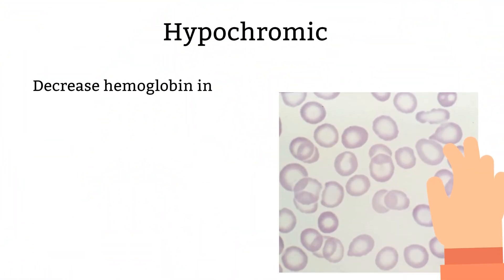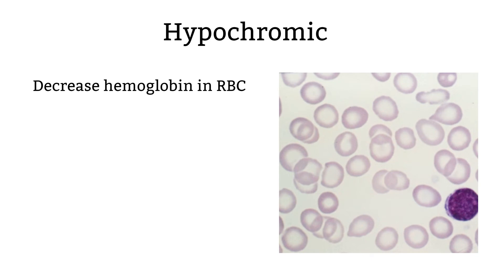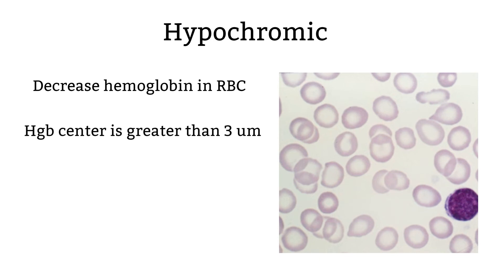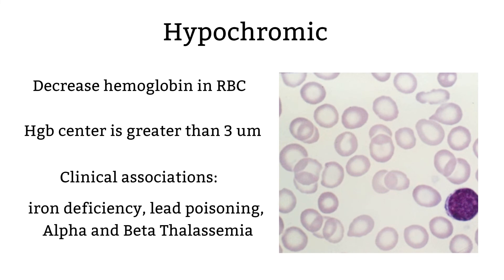Hypochromic is a term used to describe a large pale center of the red blood cells. Hypochromic usually associates with cells being microcytic or normocytic. For a cell specified as hypochromic, the pale center is usually greater than one-third of the cell. It's not always the case, but usually the MCHC is less than 32. Here are a few illnesses that associate with hypochromic.